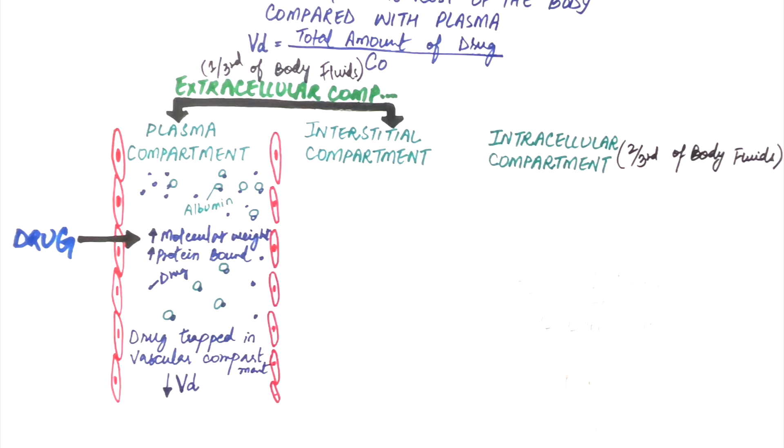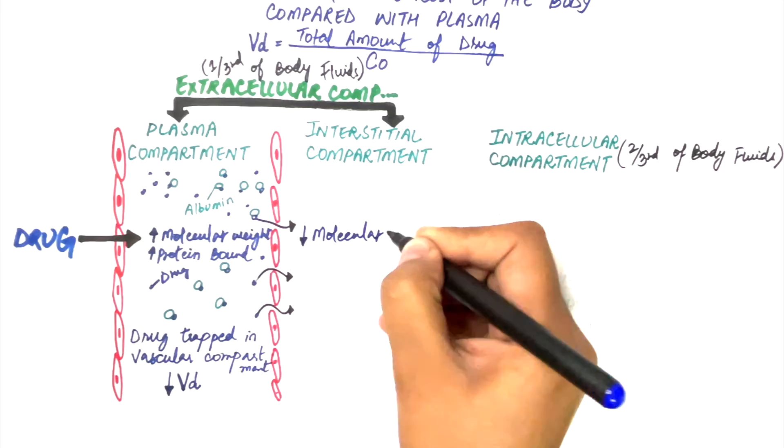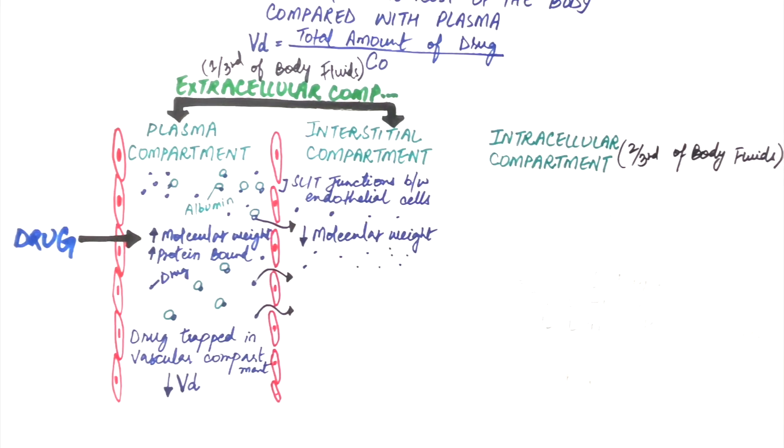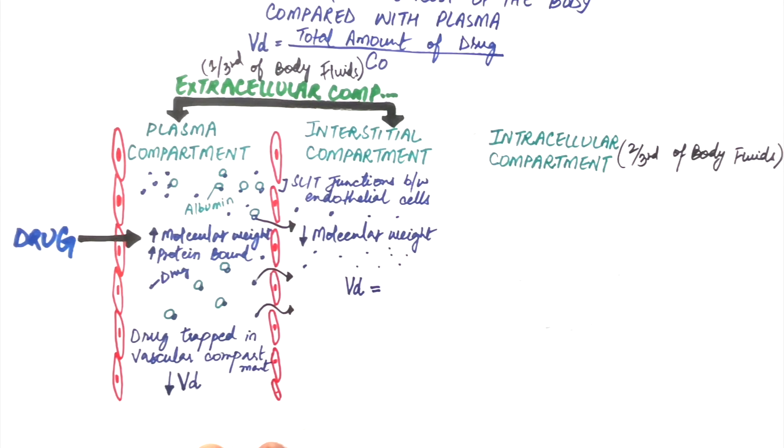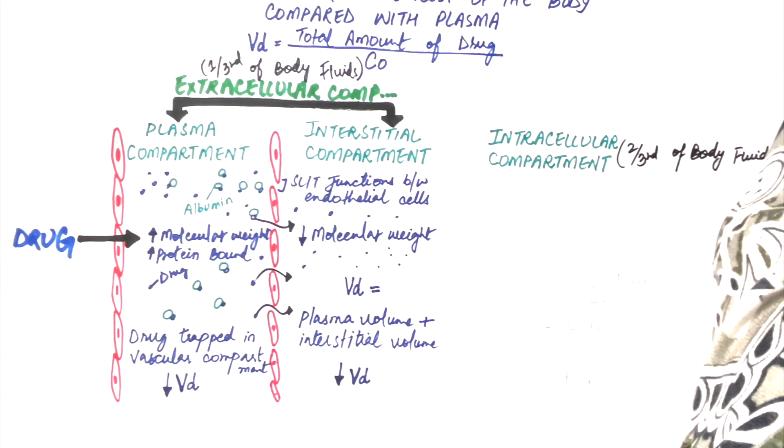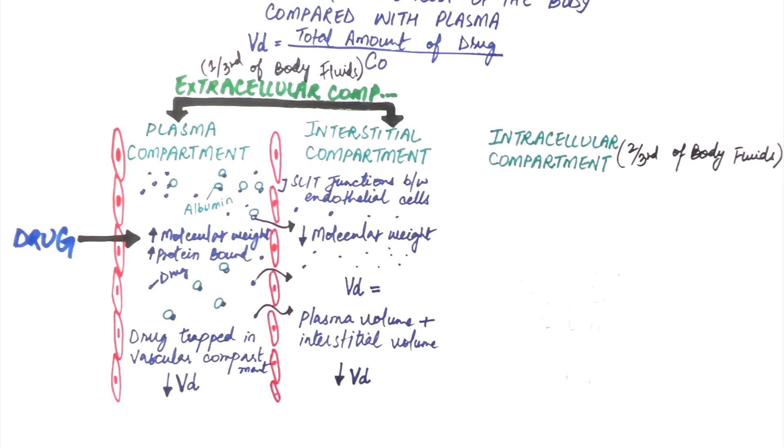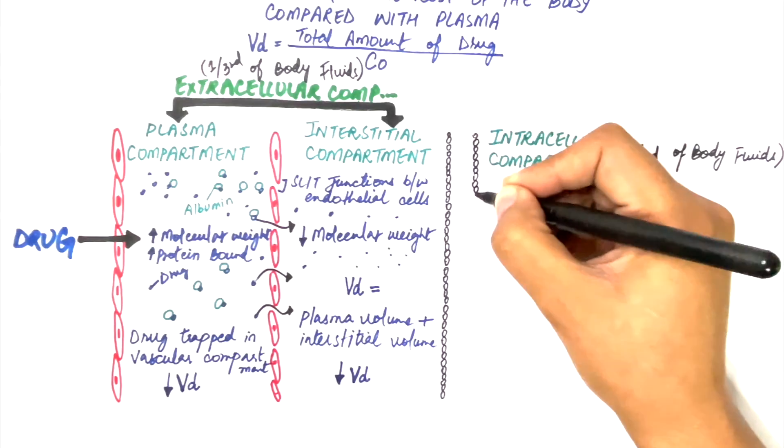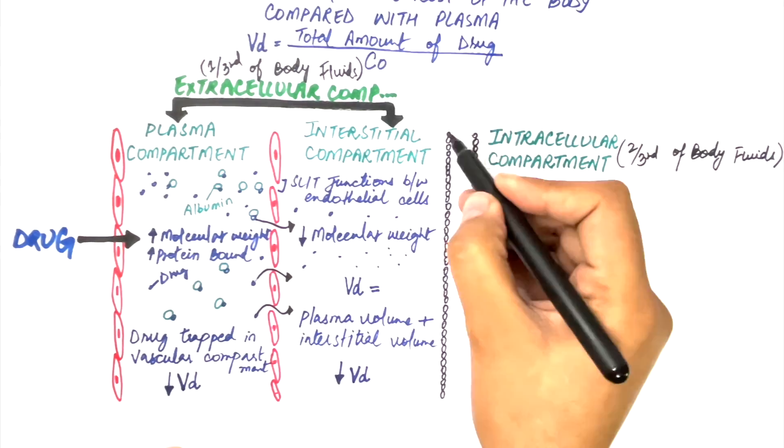If a drug has a low molecular weight, that is a small size drug, and it is a charged and hydrophilic drug, it can easily pass through the slit junctions of the endothelial cells into the interstitial compartment. However, this charged and hydrophilic drug cannot pass the phospholipid bilayer of the cell membranes, hence cannot enter the cellular compartment. As a result, this drug distributes into a volume that is the sum of the plasma volume and the interstitial volume, which both makes the extracellular compartment. The volume of distribution will still be reduced as both of the vascular and interstitial compartment makes only one-third of the body fluids.